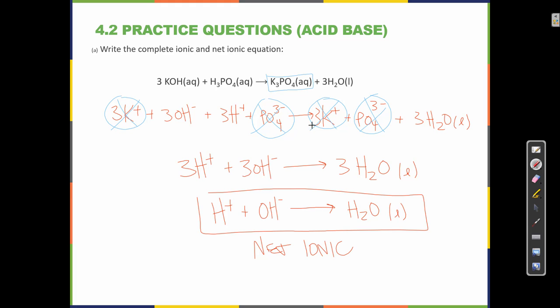In an acid-base reaction, the net ionic equation is always H+ plus OH- makes H2O. This is always the net ionic equation in an acid-base reaction.